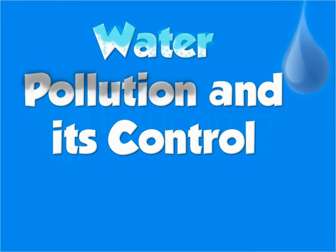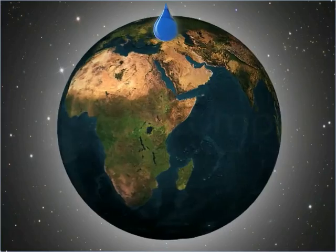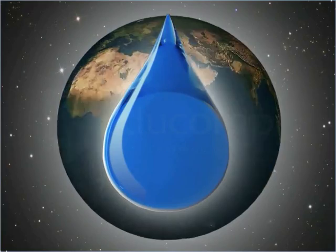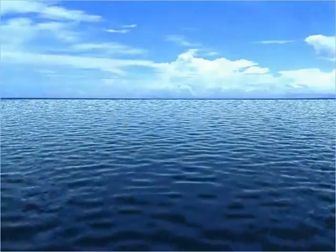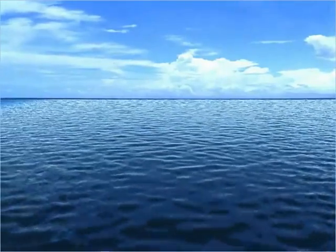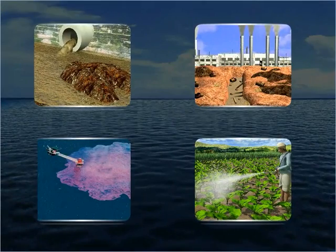Water Pollution and Its Control. In this module, you will learn what causes water pollution and how it can be controlled. More than two-thirds of the Earth's surface is occupied by a unique liquid, water. Water is unique as one cannot imagine life without it. However, water is constantly being polluted by several human activities.